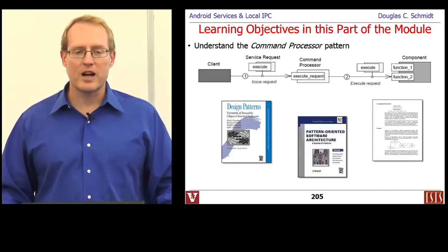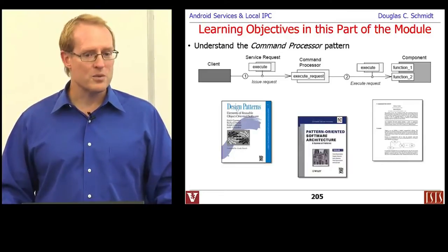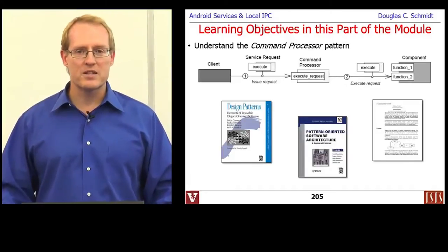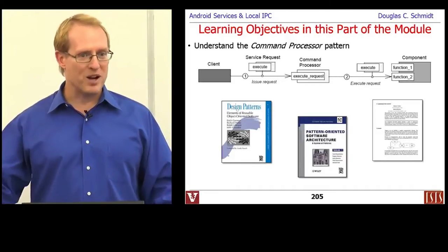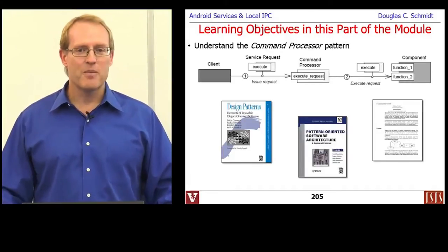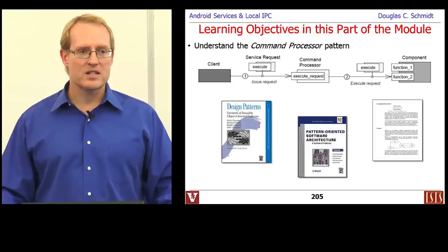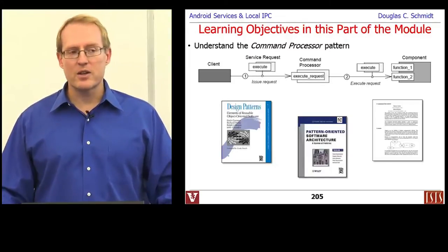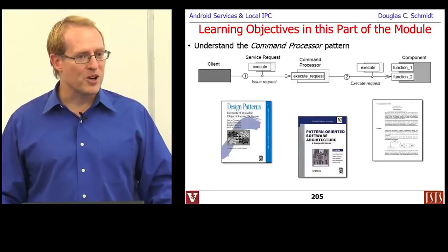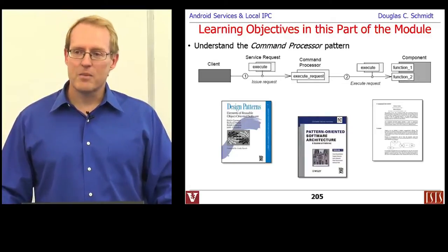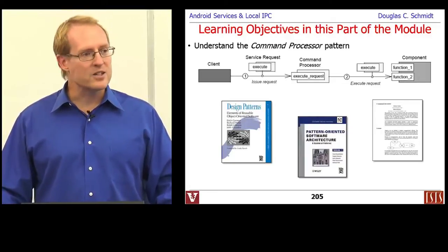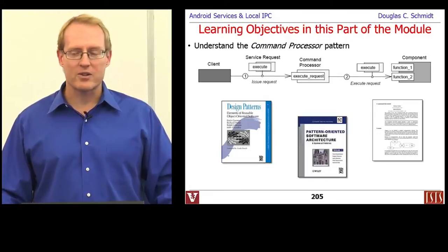The particular pattern we're going to be covering is called the Command Processor pattern. This pattern appears in a number of different places. The original pattern with the name Command Processor appeared in the book Pattern Oriented Software Architecture Volume 1, which was about systems of patterns and talked about a lot of different architectural patterns. There's another pattern in the Gang of Four book called the Command Pattern, which is related to the Command Processor pattern, but it's not quite identical.